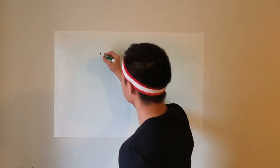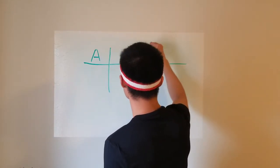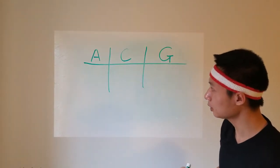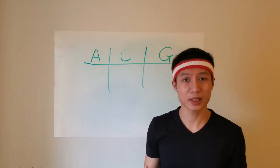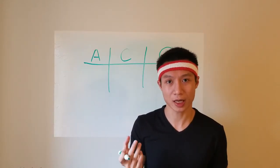You have A, you have C, then you have G. And remember speed is how much distance we can travel given a period of time.